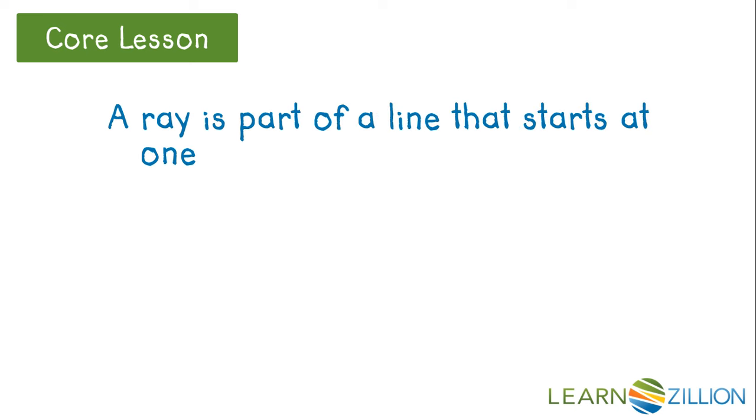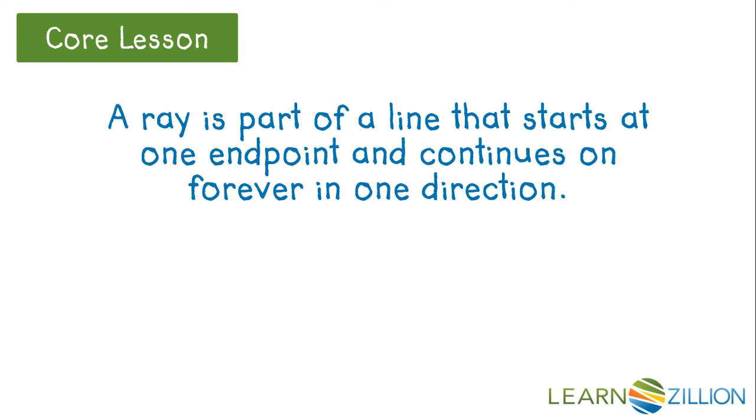A ray is part of a line that starts at one endpoint and continues on forever in one direction. Remember the sun's light. It starts at one endpoint and continues on and on in one direction. You can also think of a flashlight. Take a look at this ray. We have an endpoint X and a point Y. When labeling a ray, we have to start with the endpoint first and then any other point after that. We call this ray XY.